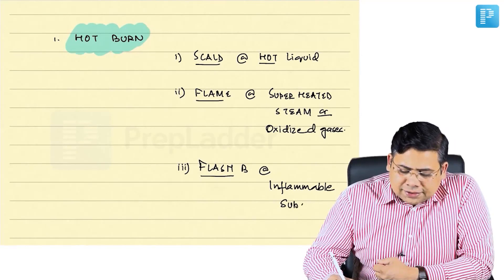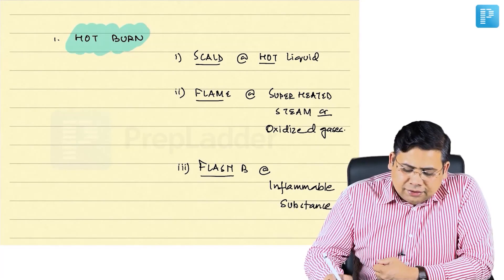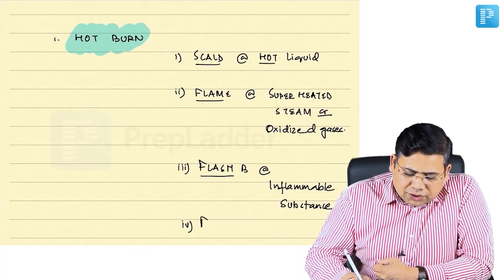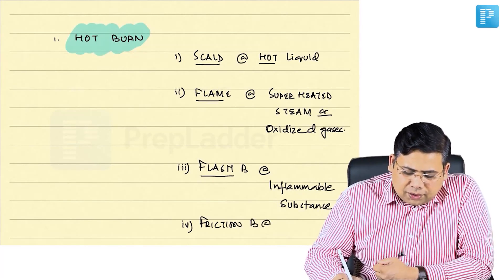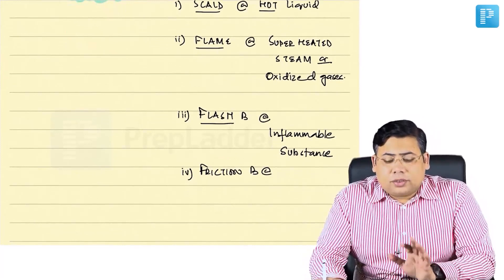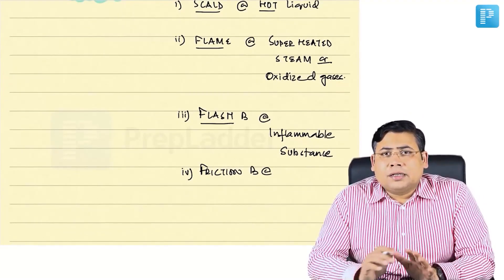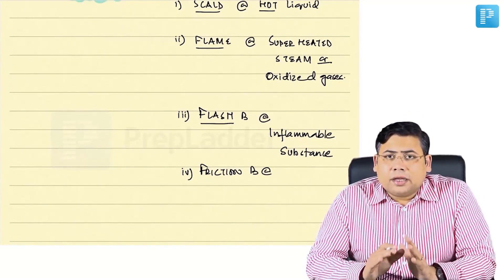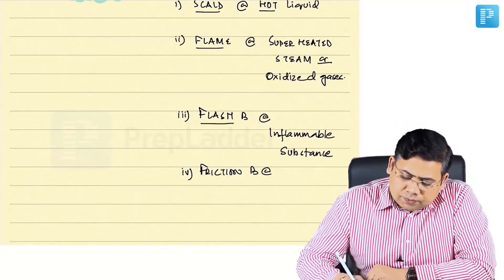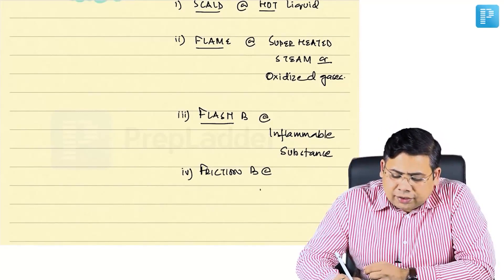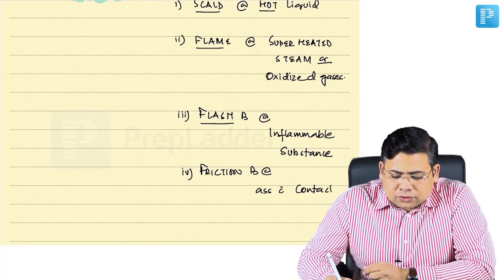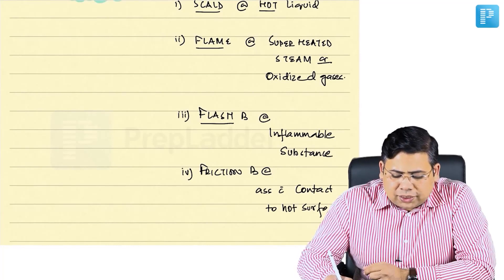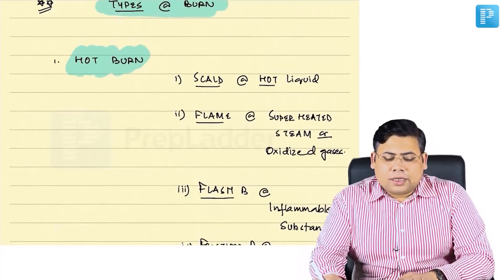The last in this category is friction burn. Friction burn is the burn due to contact with a superheated or hot surface — damage associated with contact to a hot surface. So these are the four types of hot burns.